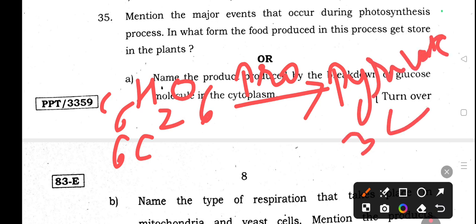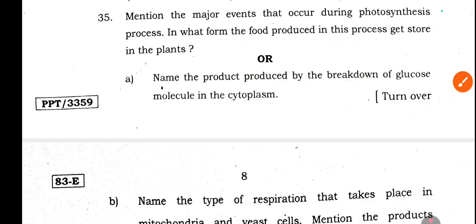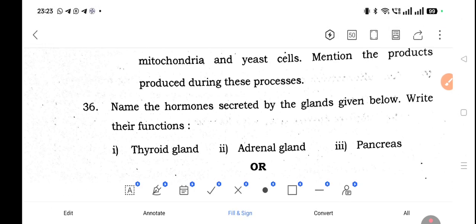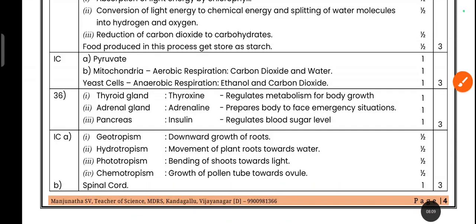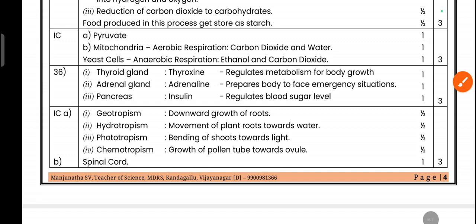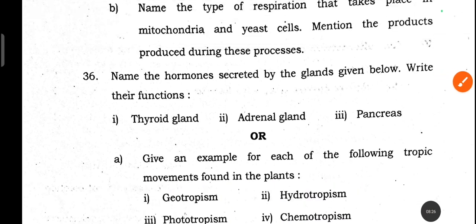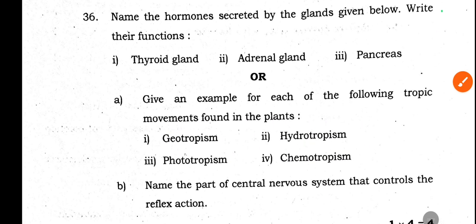Question b: Name the type of respiration that takes place in mitochondria and yeast cells and mention the products. In mitochondria, aerobic respiration produces carbon dioxide and water, and a large amount of energy is released. In yeast cells, anaerobic respiration produces ethanol and carbon dioxide, and a small amount of energy is released.